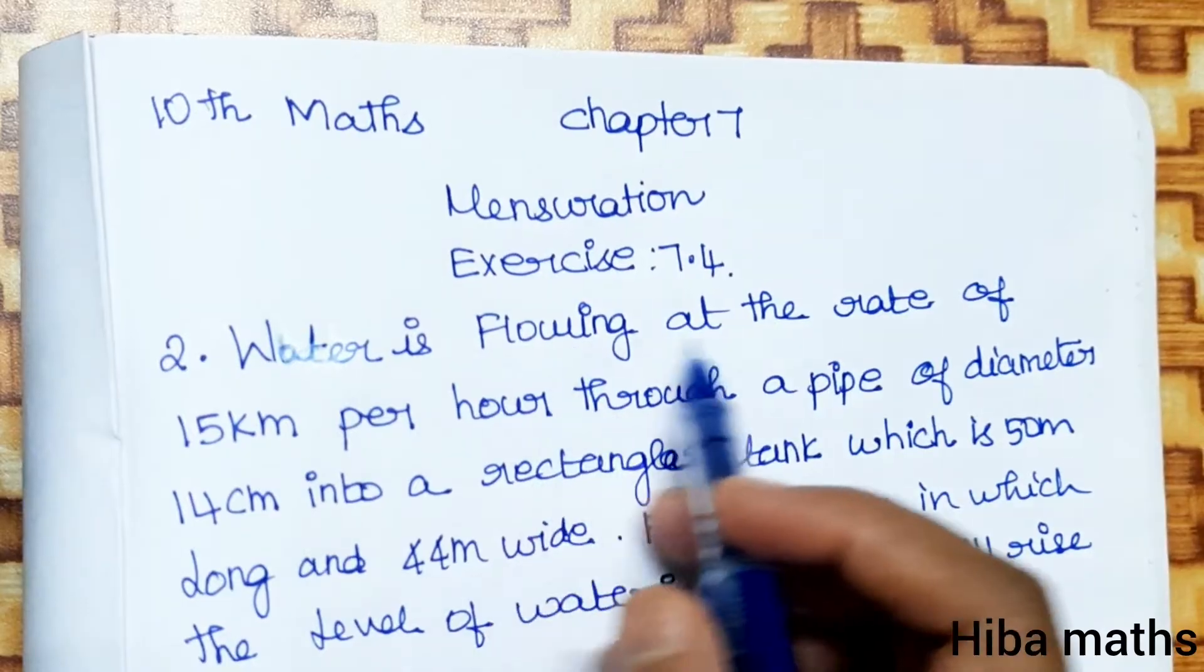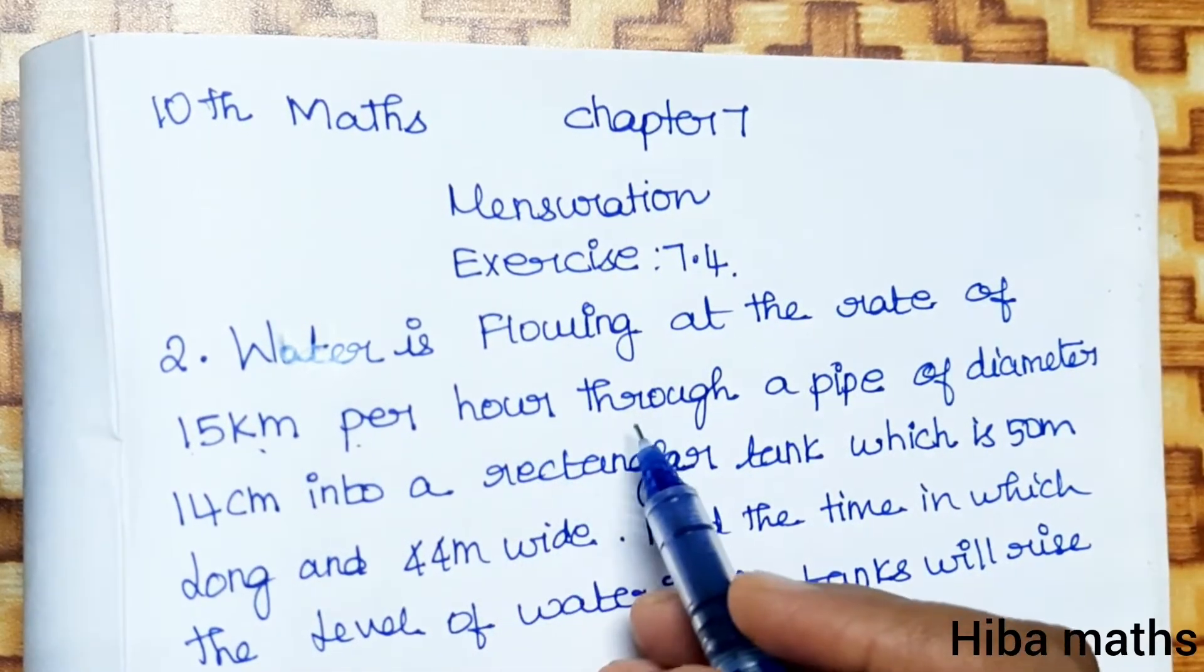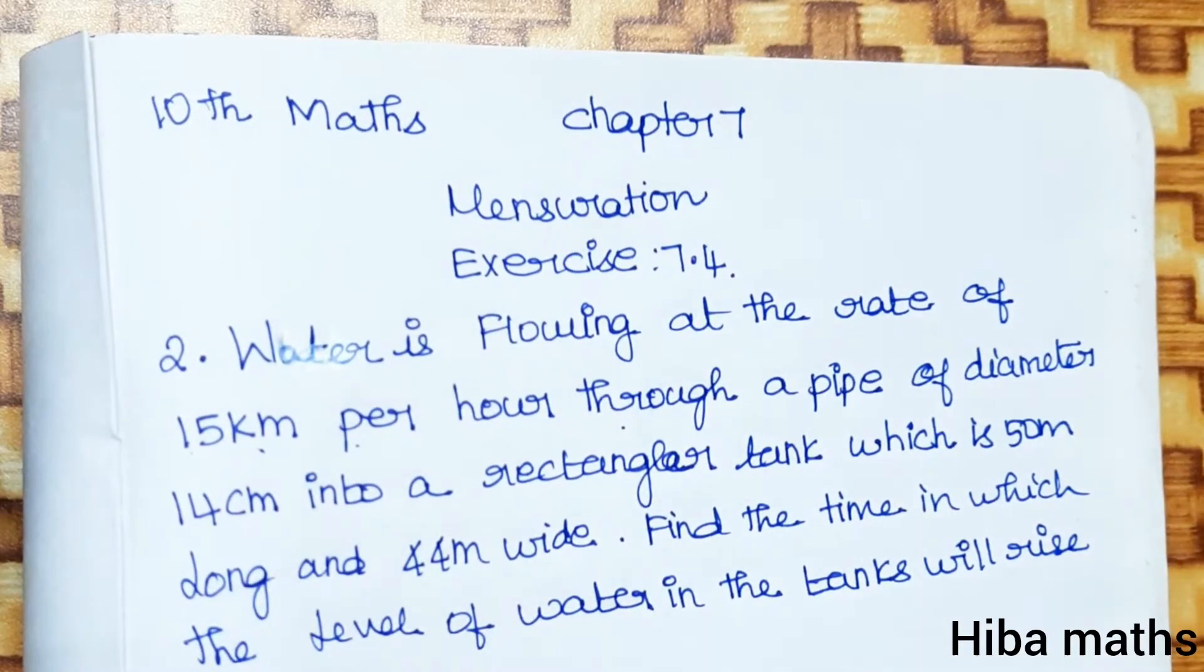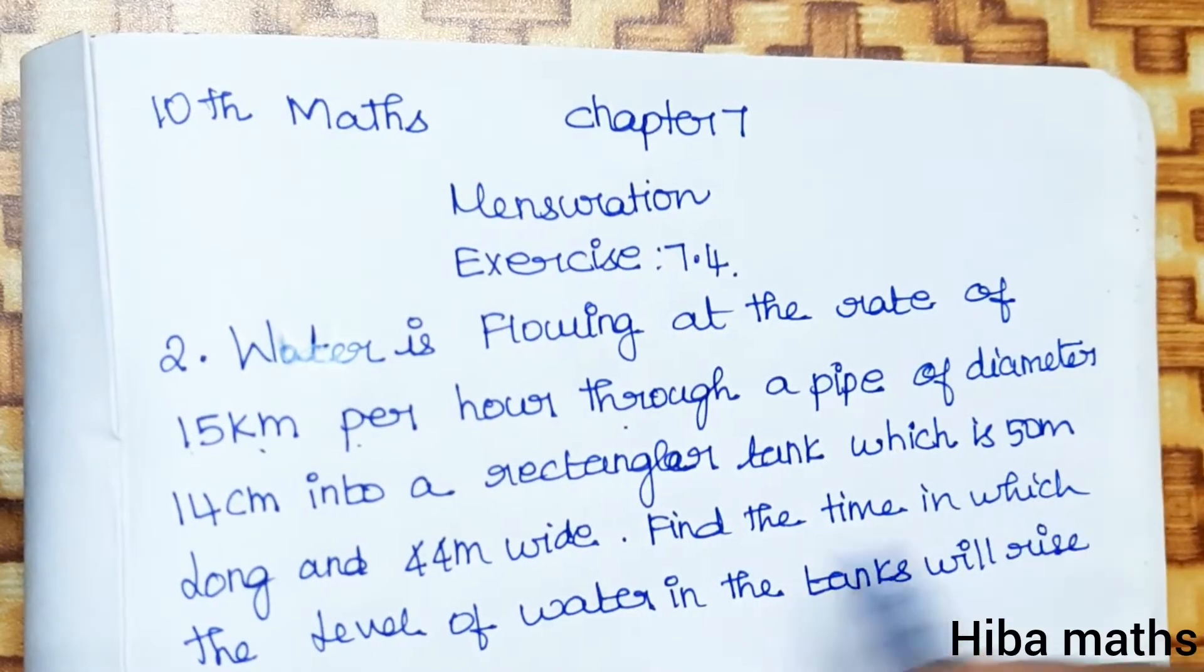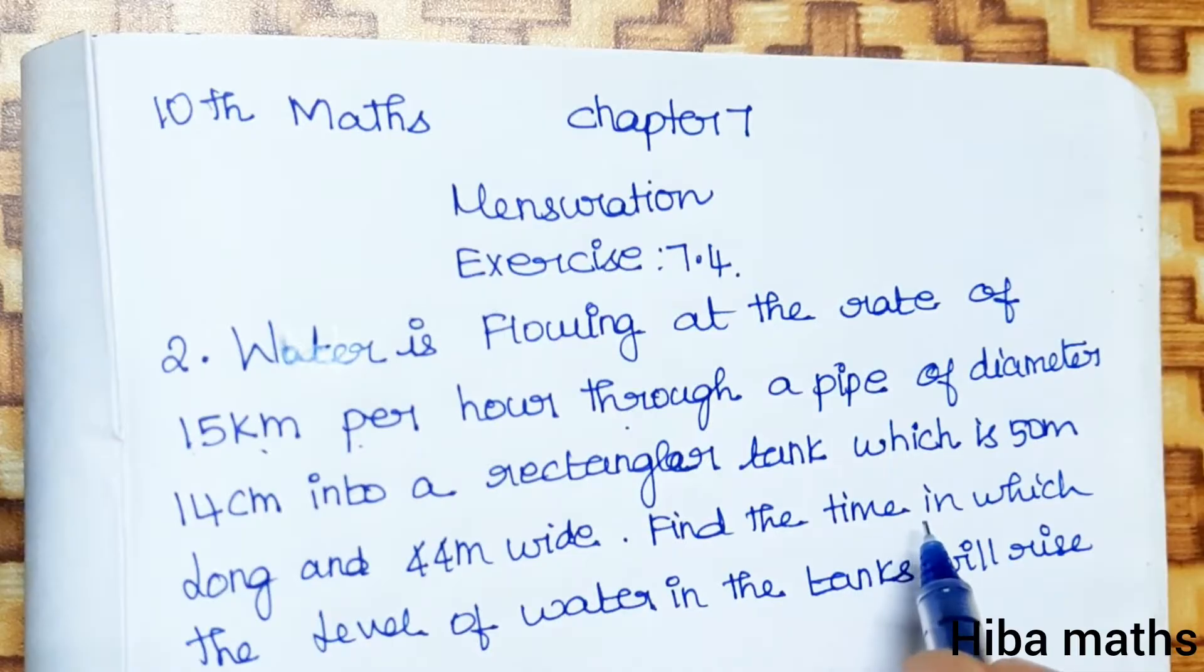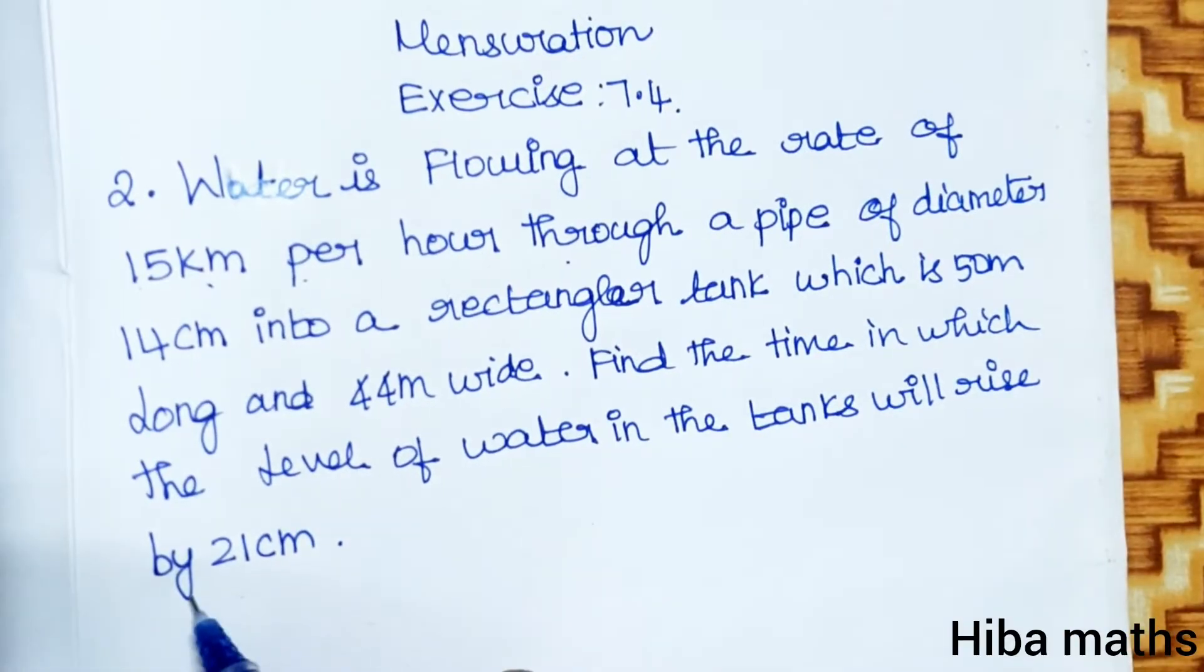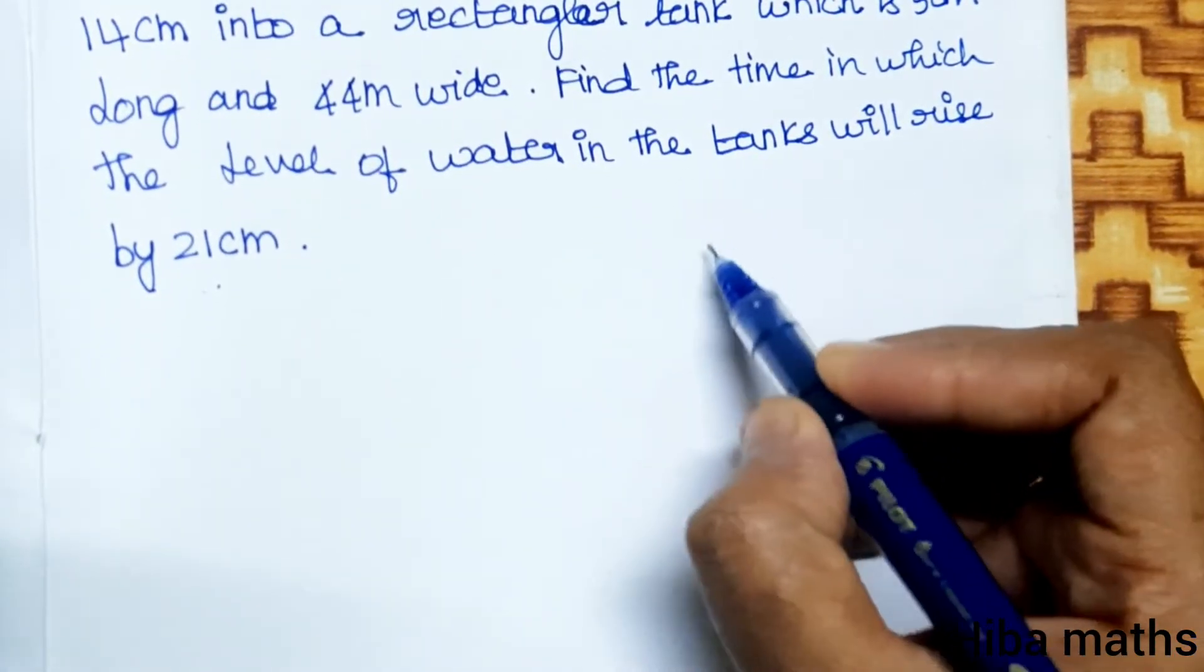Water is flowing at the rate of 15 km per hour through a pipe of diameter 14 cm into a rectangular tank which is 50 meter long and 44 meter wide. Find the time in which the level of water in the tanks will rise by 21 cm.